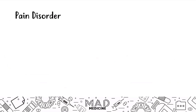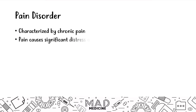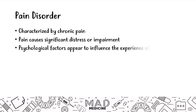The next disorder is pain disorder, in which you have a patient who has chronic pain — that is one key important thing to understand. It's characterized by pain, as the name states, and the pain usually causes significant distress and impairment. One key giveaway is that psychological factors actually influence the experience of the pain. If a patient is depressed, they may start feeling pain all of a sudden. That clues you into pain disorder. You can attribute the pain to something, but it's not attributable directly to a physical cause — a psychological factor leads to the pain.